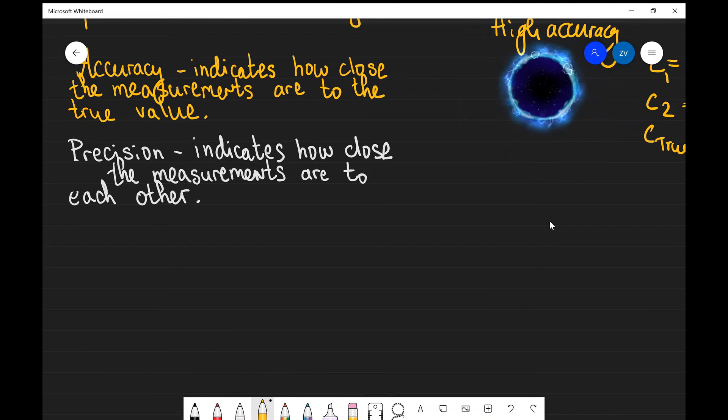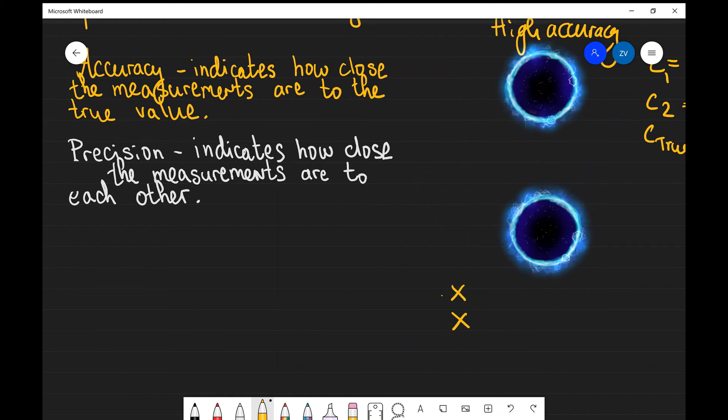Now let's have a look at precision. This indicates how close the measurements themselves are with respect to each other. For instance, if we were to open up another black hole in spacetime over here and do exactly the same experiment, however we miss the target and we consistently hit at pretty similar places quite far away from the target. This indicates high precision, however, low accuracy.